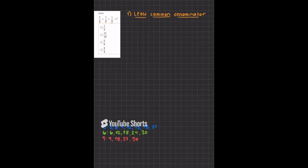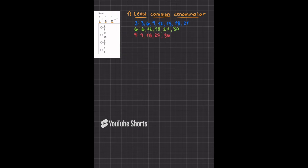I've already listed them for you, so we'll just bring it on up here. When we're looking for a least common denominator, we're listing all the multiples of each number in the denominator and finding the lowest number that they all have in common. In this case, it's going to be 18.